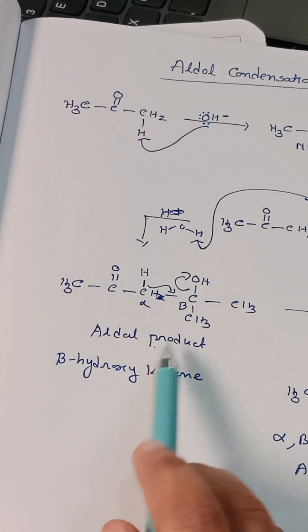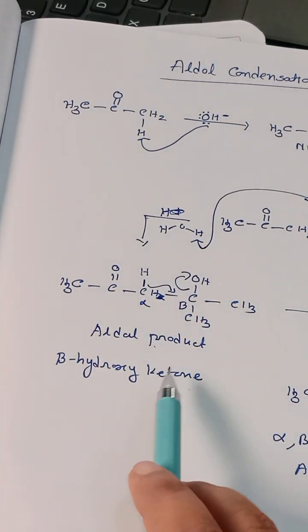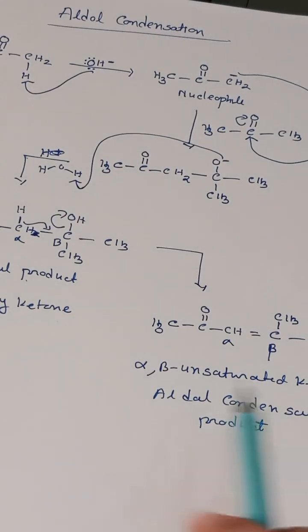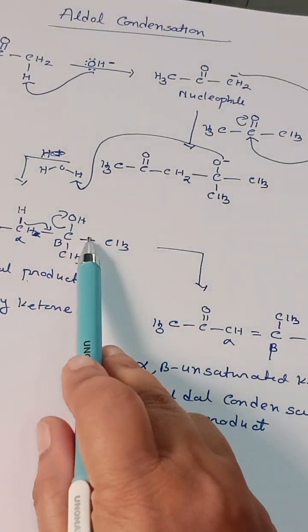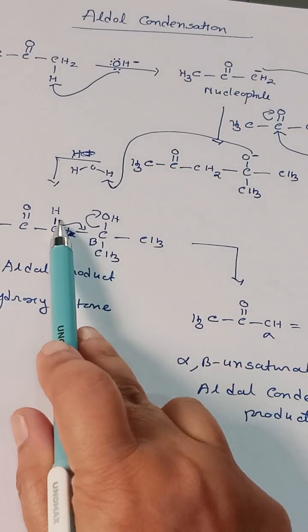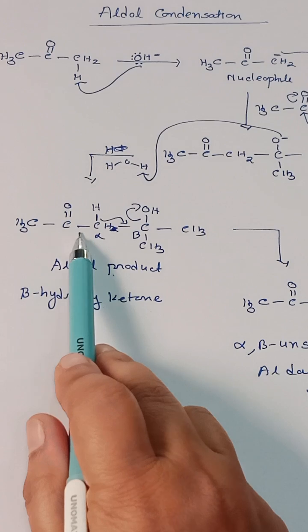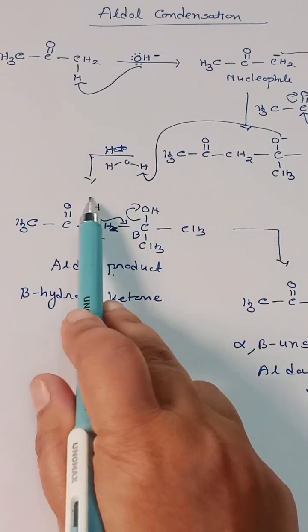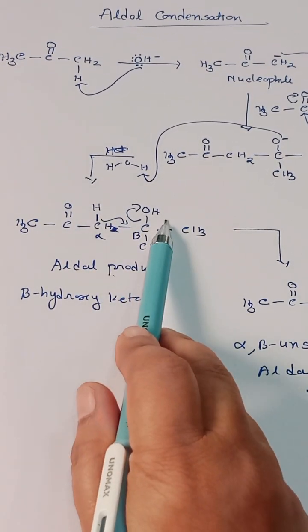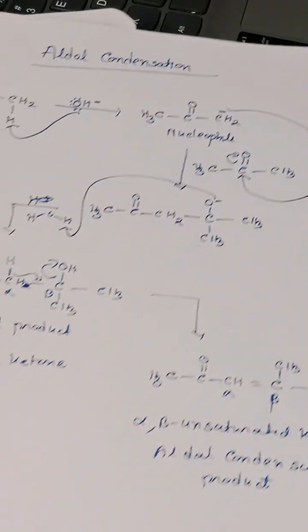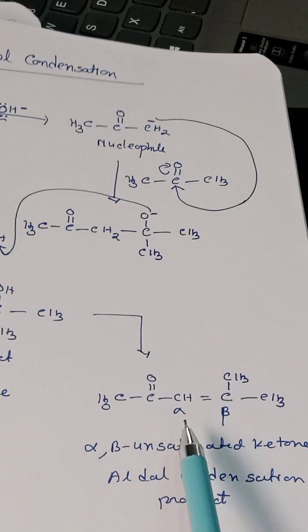This is called aldol product, but the reaction does not stop at the aldol product. Here elimination reaction takes place, meaning OH- and hydrogen from the next carbon (not from this methyl, because this hydrogen is acidic due to presence of the carbonyl carbon). This hydrogen leaves as H+, O leaves as OH-, it leaves as a water molecule, like a condensation reaction. A condensation reaction is happening and we are getting a double bond here.